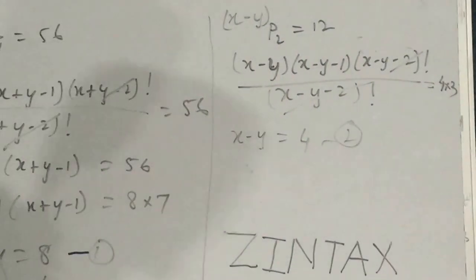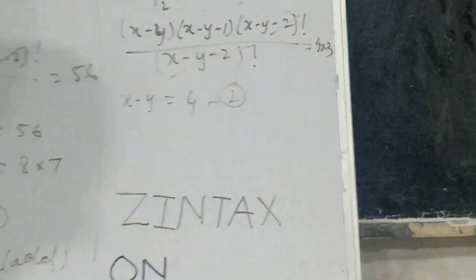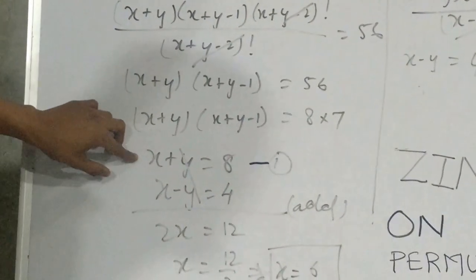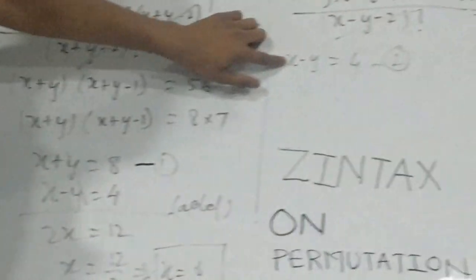And we have given 12 so we can write it as 4 into 3. So after solving it we get the equations x plus y is equal to 8 and x minus y is equal to 4.